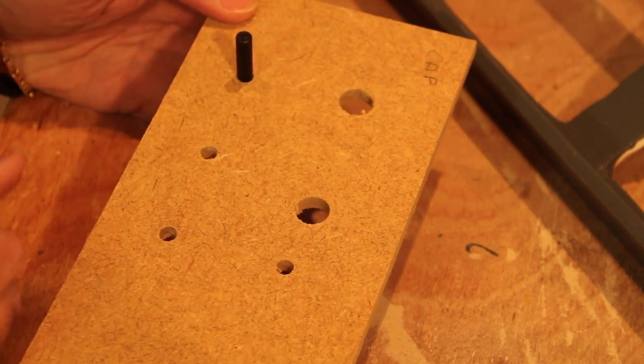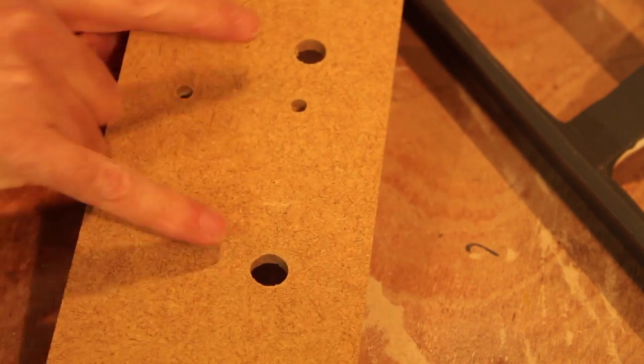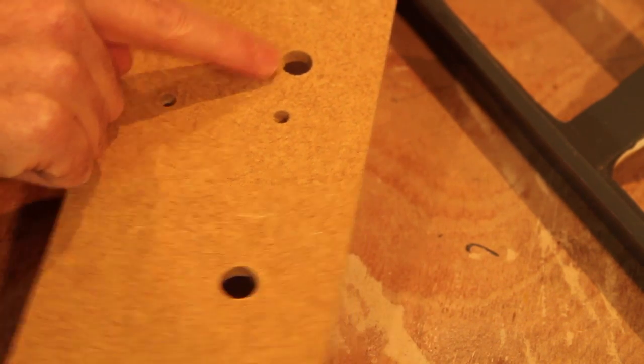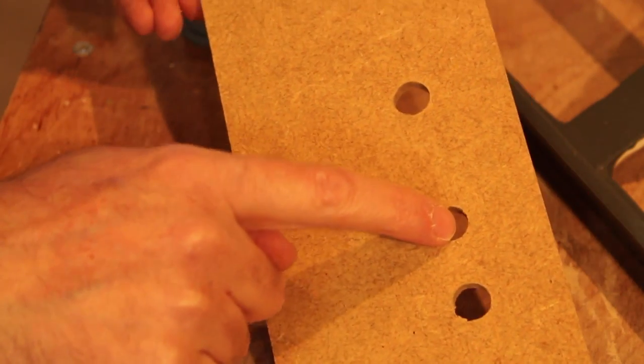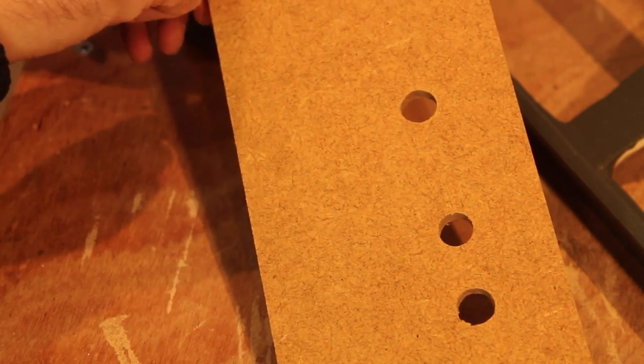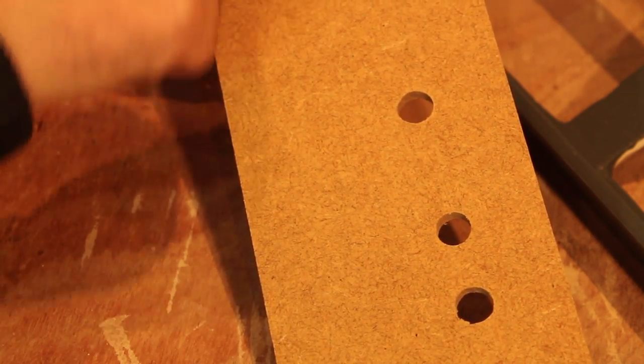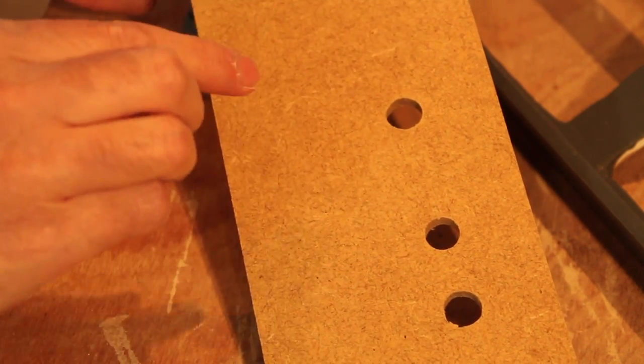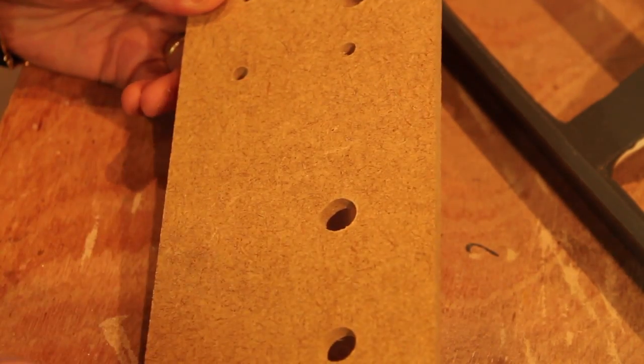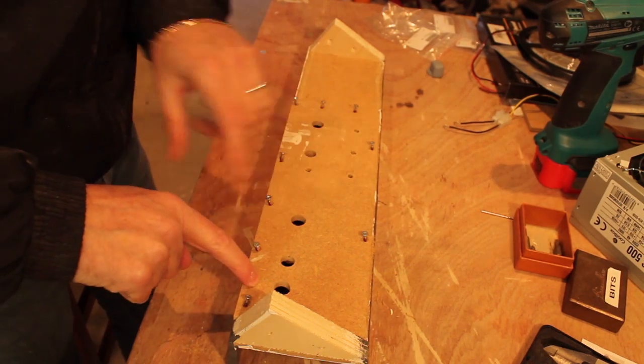Another thing I've done is I created two extra holes, one in here and one in here. They are simply for once I put the LED strips, to put cables going through and then come out at the back. It's just for commodity.